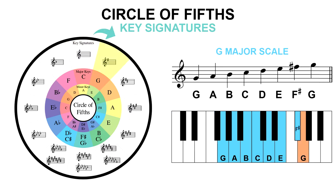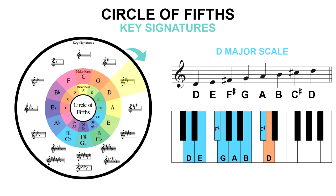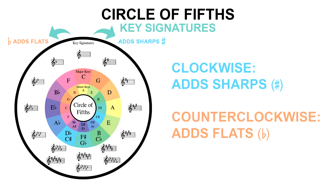Starting from the key of C and moving clockwise by ascending fifths, the key of G has one sharp: G, A, B, C, D, E, F sharp. And next, the key of D has two sharps: D, E, F sharp, G, A, B, and C sharp. Moving clockwise around the circle of fifths adds sharps to the key signatures, and moving counterclockwise adds flats.